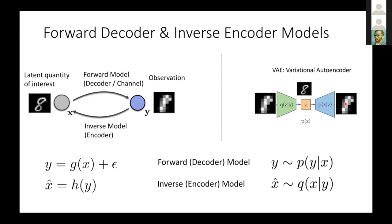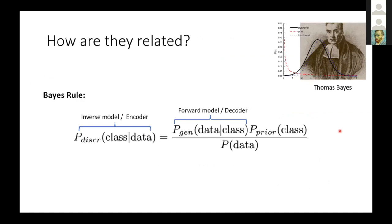How is the discriminative model related to the generative model? That's by something from your statistics 101 class: Bayes' rule. In Bayes' rule, we relate the probability of class given data — the discriminative model — to the probability of the data given the class — the generative model. Of course you need the prior of a class and the normalization, the probability of data, to connect these two things. In the generative modeling case, we parameterize this object; in the discriminative modeling case, we parameterize that object with a deep learning model.